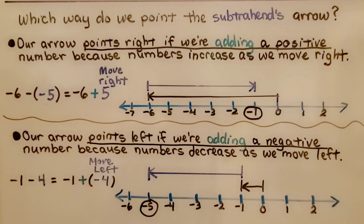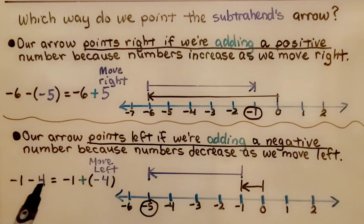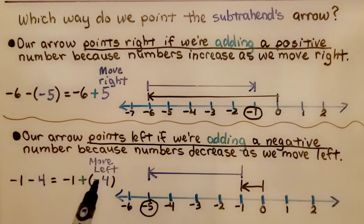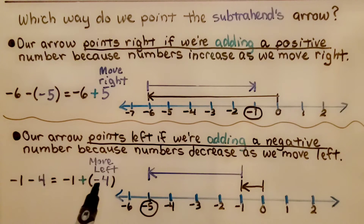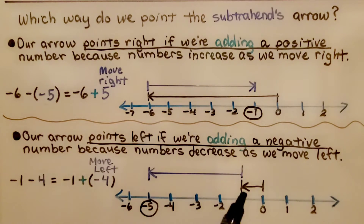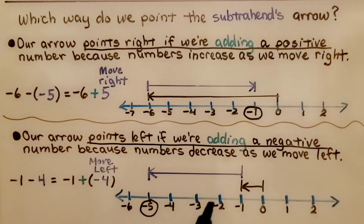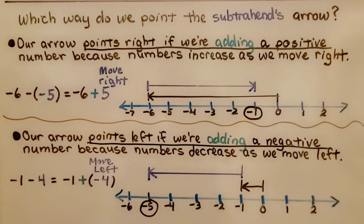Our arrow points left if we're adding a negative number, because numbers decrease as we move left. We have negative 1 minus 4, rewritten as negative 1 plus a negative 4. Before we were subtracting a positive, now we're adding a negative — we're adding the opposite. We start with negative 1, and then our subtrahend, this second number, moves left 4 units, putting us at negative 5.